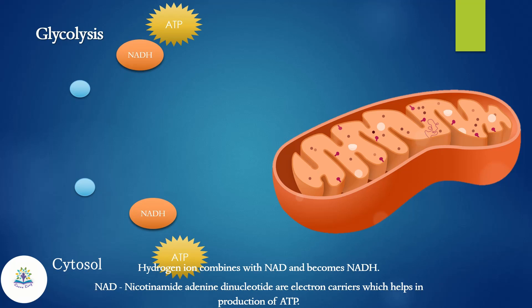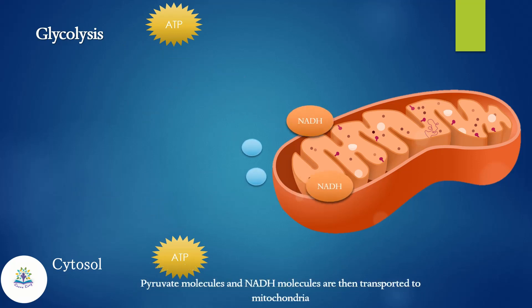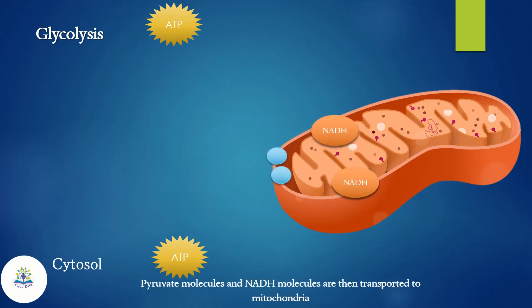The hydrogen ions combine with NAD and become NADH. NAD, or nicotinamide adenine dinucleotide, are electron carriers which help in the production of ATP. The pyruvate molecules and NADH molecules are then transported to the mitochondria.